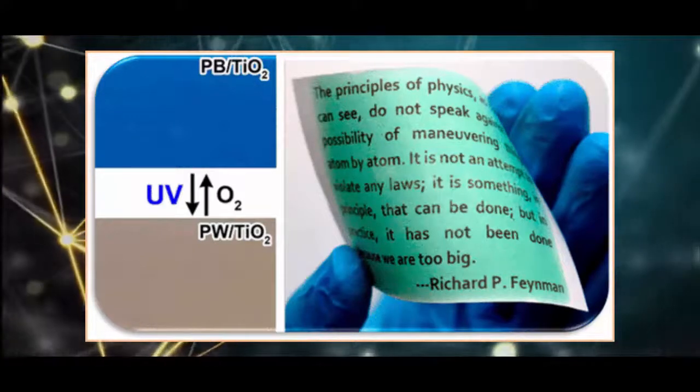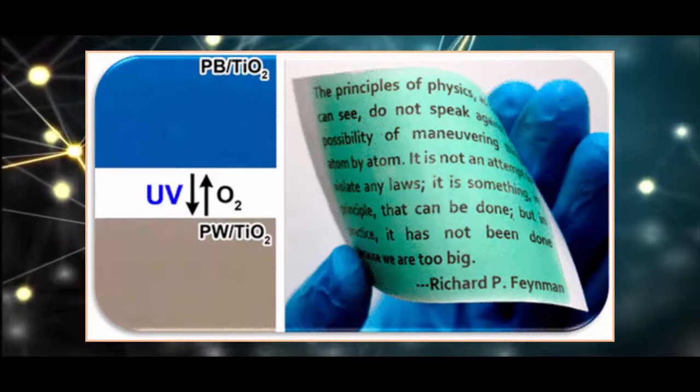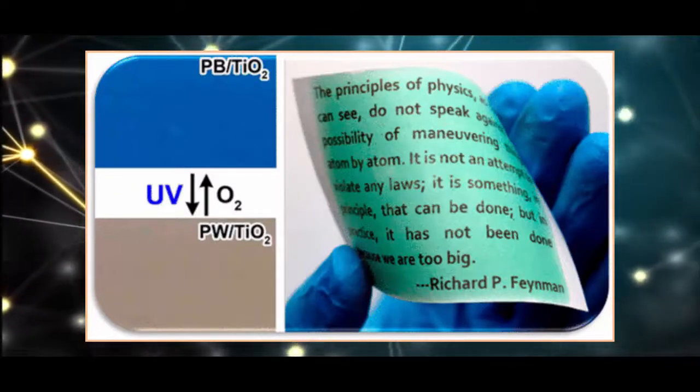The color change can be reversed when the coating is heated to 120 degrees Celsius and allows for up to 80 rewrites.